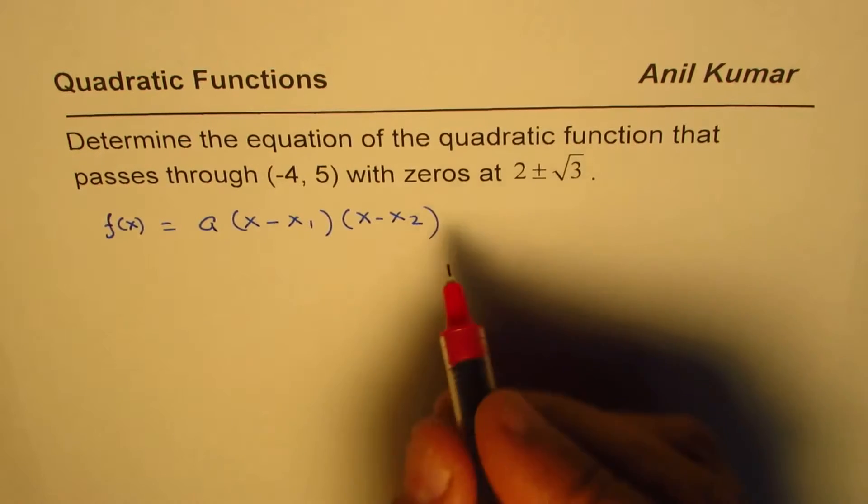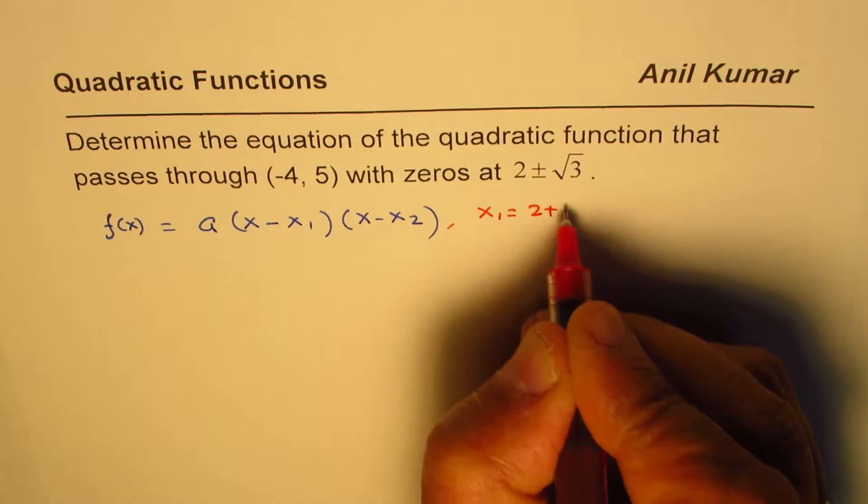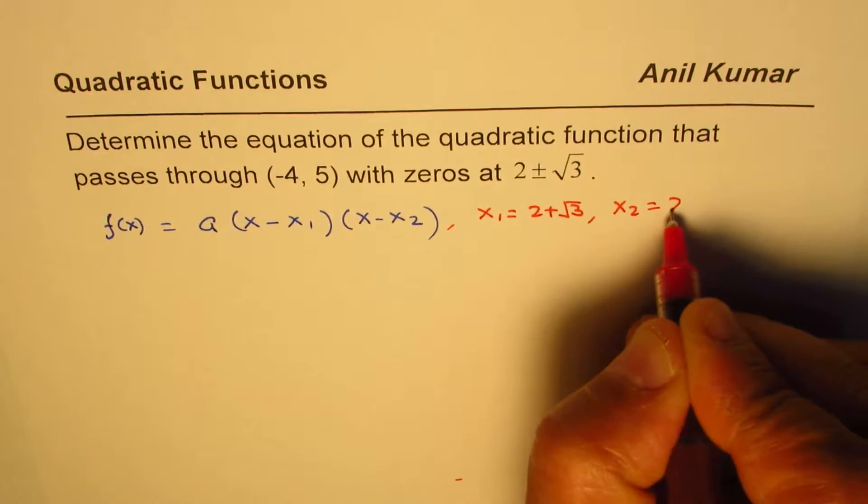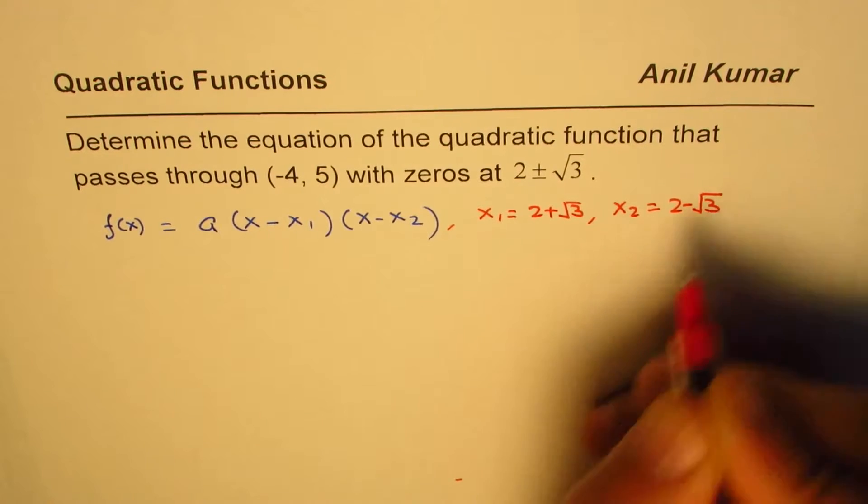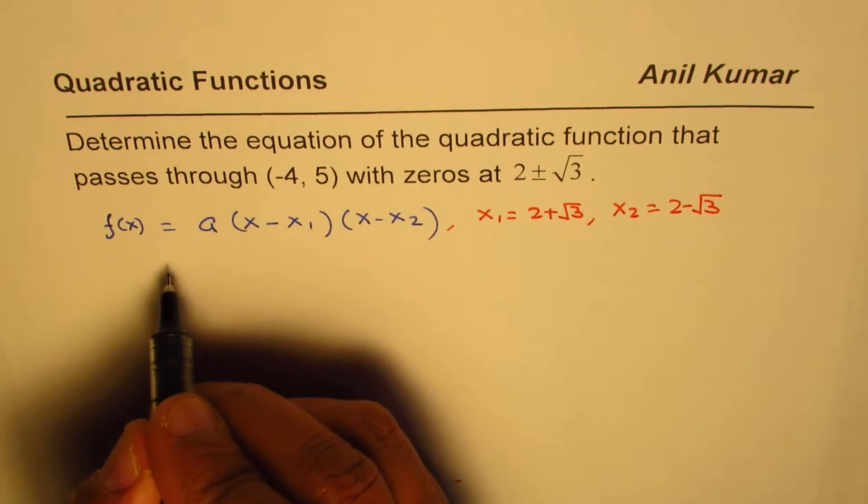What are we given here? We are given x₁ = 2 + √3 and x₂ = 2 - √3. To find a, we'll use this point later. So let's substitute and simplify.